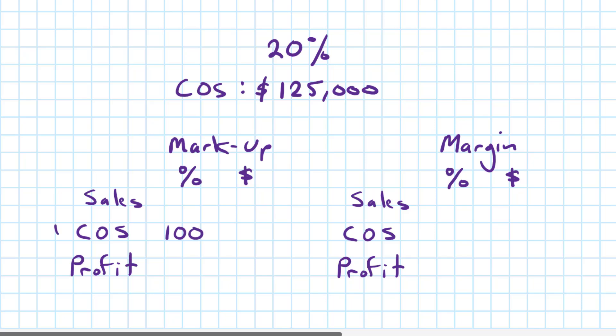Markup, we're going to go up and we will then add that 20% to the 100, so we'll have 120%. And if I subtract the cost of sales from the sales, I will be left with 20% as the profit.